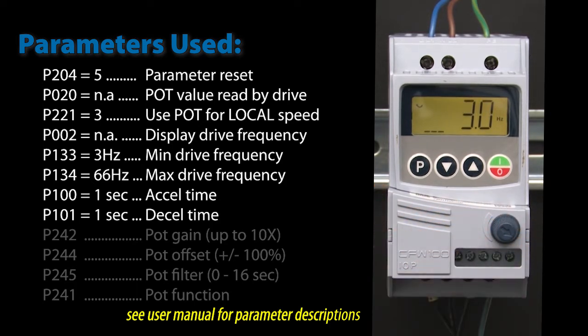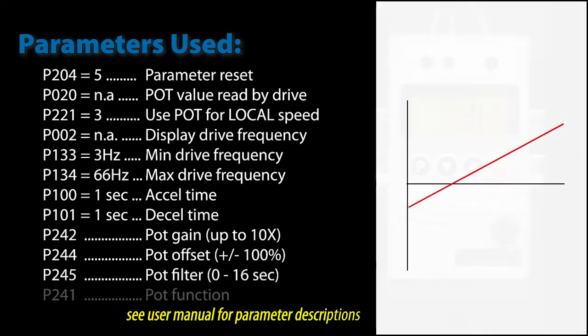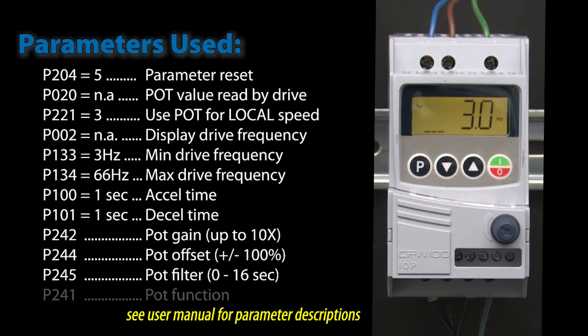Well, that's really all you need to know for most applications. If you want to modify how the potentiometer value responds, then parameter 242 modifies the gain up to 10x. Parameter 244 modifies the offset plus or minus 100% and parameter 245 adds filtering which basically averages multiple samples over time to give you a smoother response.